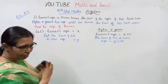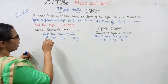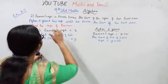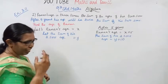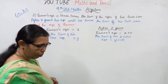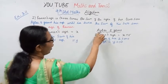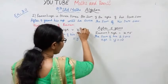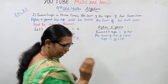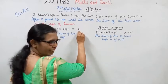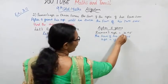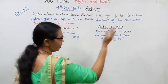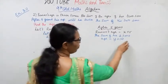Yes, it's ideal. Let the sum of his 2 sons' age be y. After 5 years, let Raman's age be x plus 5. Let the sum of his two sons' age after 5 years be y plus 10.